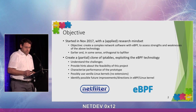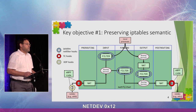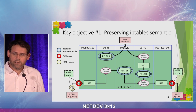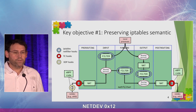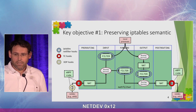This talk is about our experience in implementing this. We divided our work into four main challenges, four main objectives. The first objective is to preserve the IP tables semantics. If the user configures filtering rules in IP tables — for the time being, just filtering rules, we're not considering NAT rules — we have to emulate exactly that behavior with eBPF.